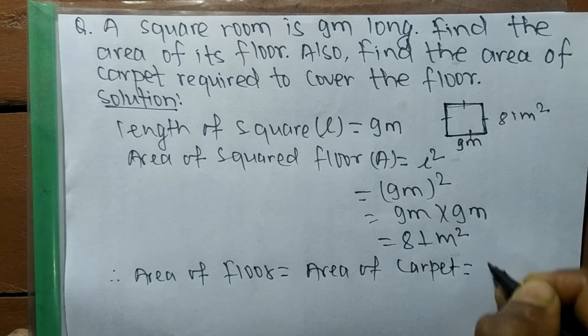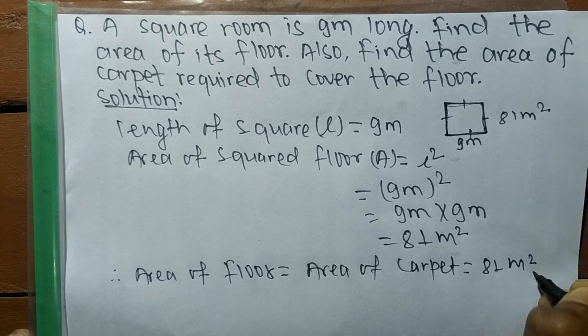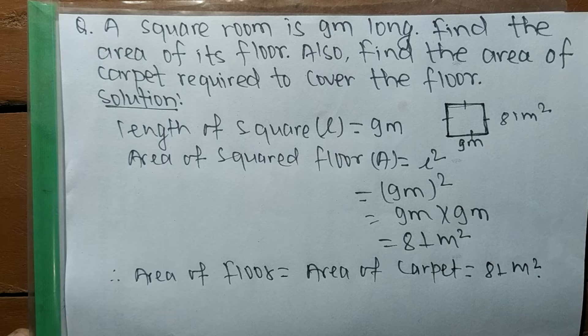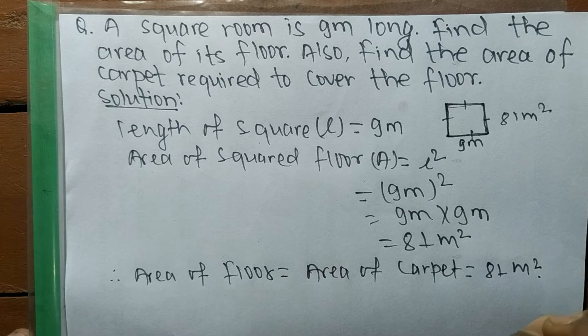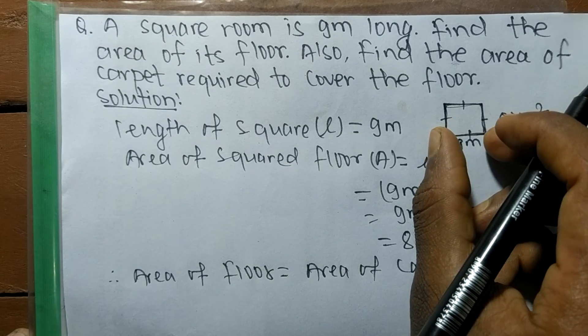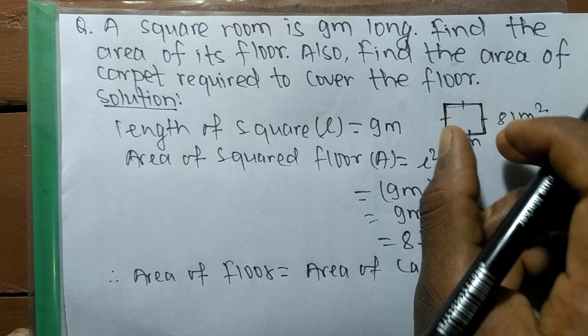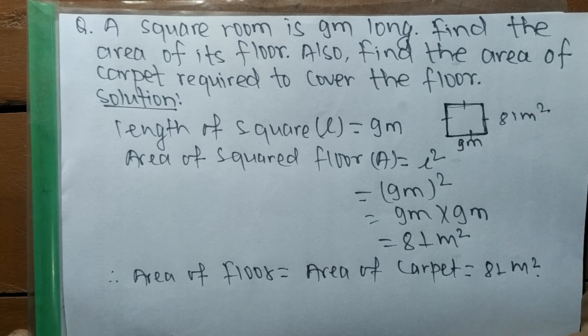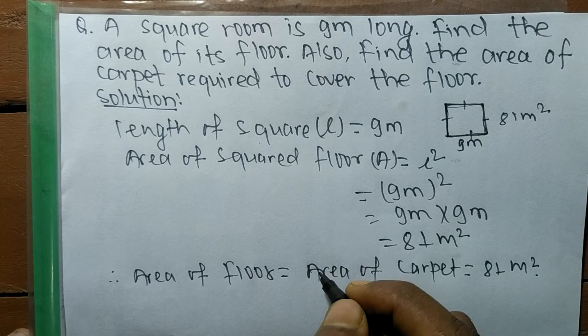Which is 81 square meters. It means the area of the room or any floor is equal to the area of the carpet, because the shape of the carpet is adjusted according to the shape of the room or the floor or any material. So this much for today.